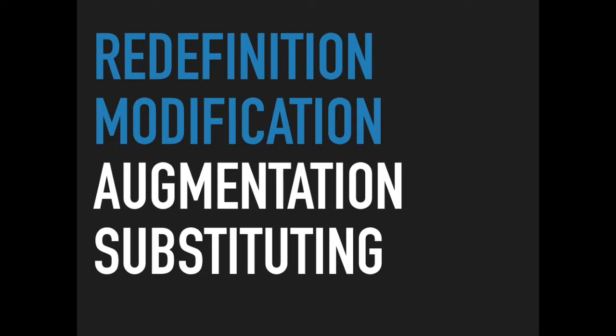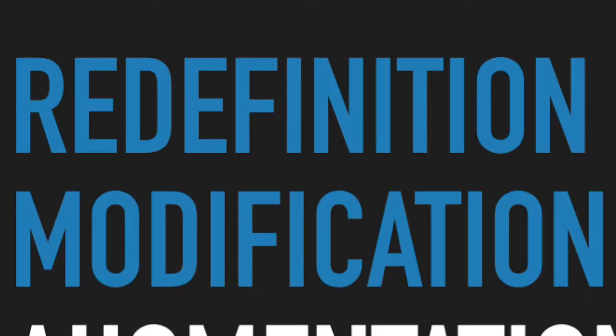Augmentation is a slight improvement — certain things function better. Modification is where the task at hand needs to be significantly redesigned in order to actually be accomplished. And then the truly transformative step is Redefinition, in which we are doing a new task that was previously unconceivable. For example, if we had one-to-one and I just put the textbook online — a text version — that's substitution. Augmentation would be giving them an e-book where they can click links for definitions and see where others highlighted. Modification and Redefinition are where we really need to focus — actually giving students access to tools and having them create something new.